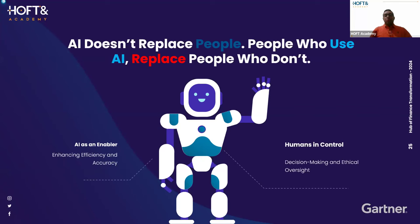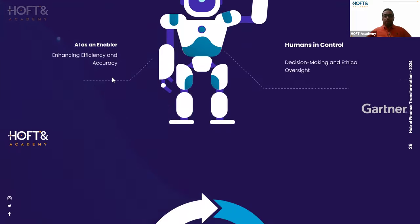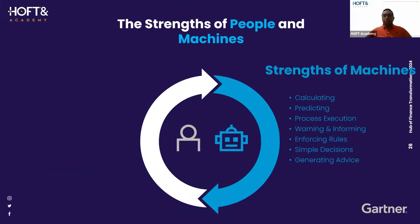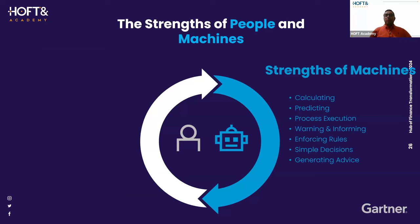Let me explain what should the machine do and what should the people do in the finance function. The machine will do the following: it can help us with mathematical calculations — aggregation, submission, multiplication, even very complex calculations. Also, the machine can make predictions, process execution, automation, warnings, raising flags, enforcing rules, simple decision making, and generating advice. This is what the machine can do for us.